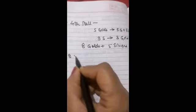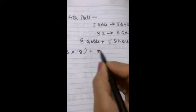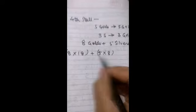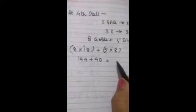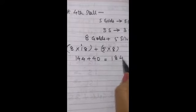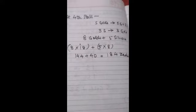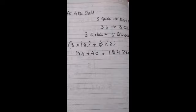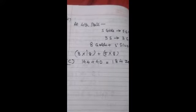Now this 8 golds will fetch her 18 zeds. And this 5 silvers will fetch her 8 zeds. So it will be 144 plus 40, that will be 184 zeds. This she gets after she has won all her games at the fourth stall. Thus option C is correct, 184 zeds.